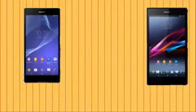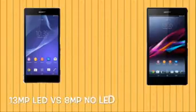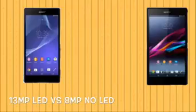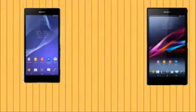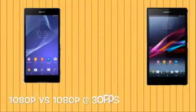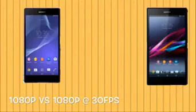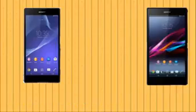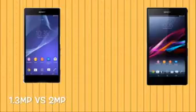In terms of the camera, we get a 13-megapixel camera on the T2 Ultra versus an 8-megapixel camera on the Z Ultra. The T2 Ultra has an LED flash whereas the Z Ultra has no LED flash. Both cameras can record 1080p HD video at 35 frames per second, and both have a front-facing camera — the Z Ultra has a 2-megapixel front camera versus a 1.3-megapixel on the T2 Ultra.